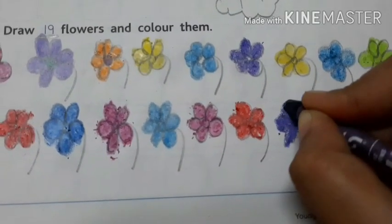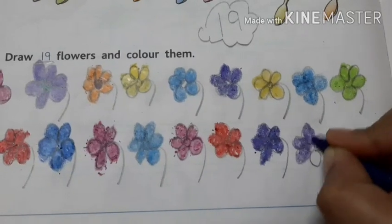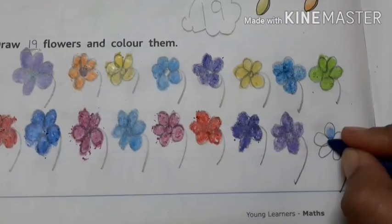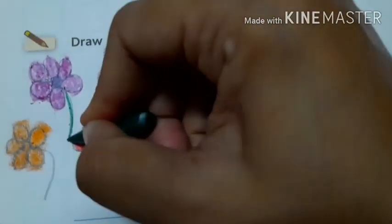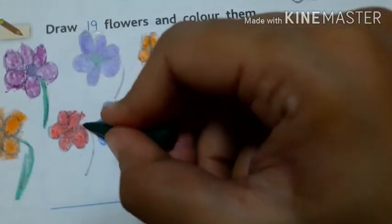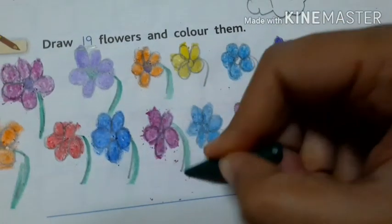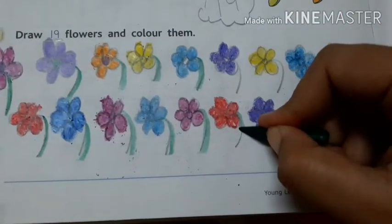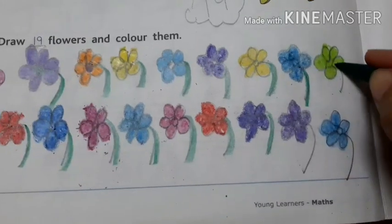So you see here, we color slowly, slowly and beautifully. And we choose only crayon color to color all the flowers. How many flowers have we drawn here? 19. And now we done the coloring. So you see, we color on them beautifully. So first, you draw 19 flowers.